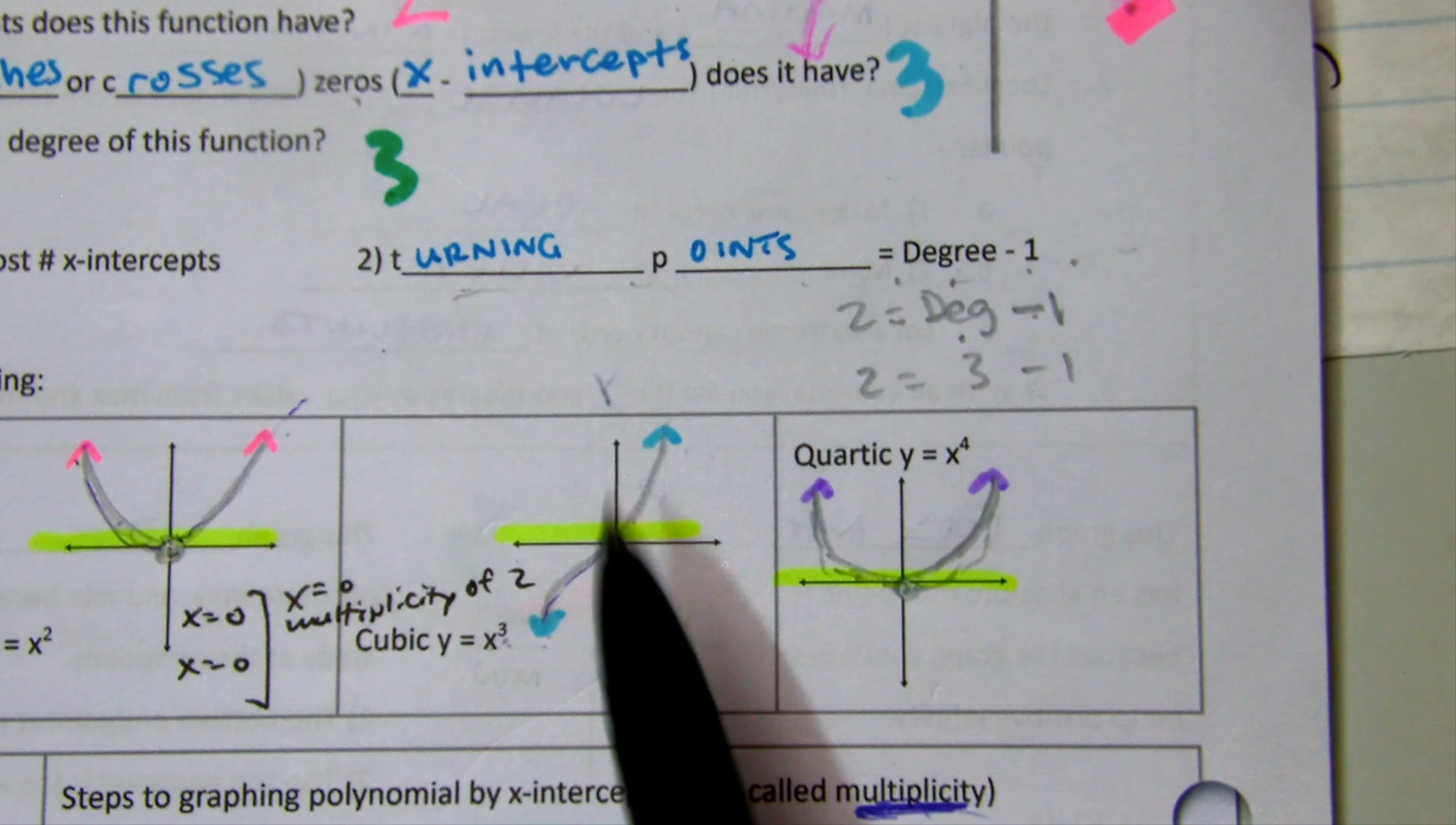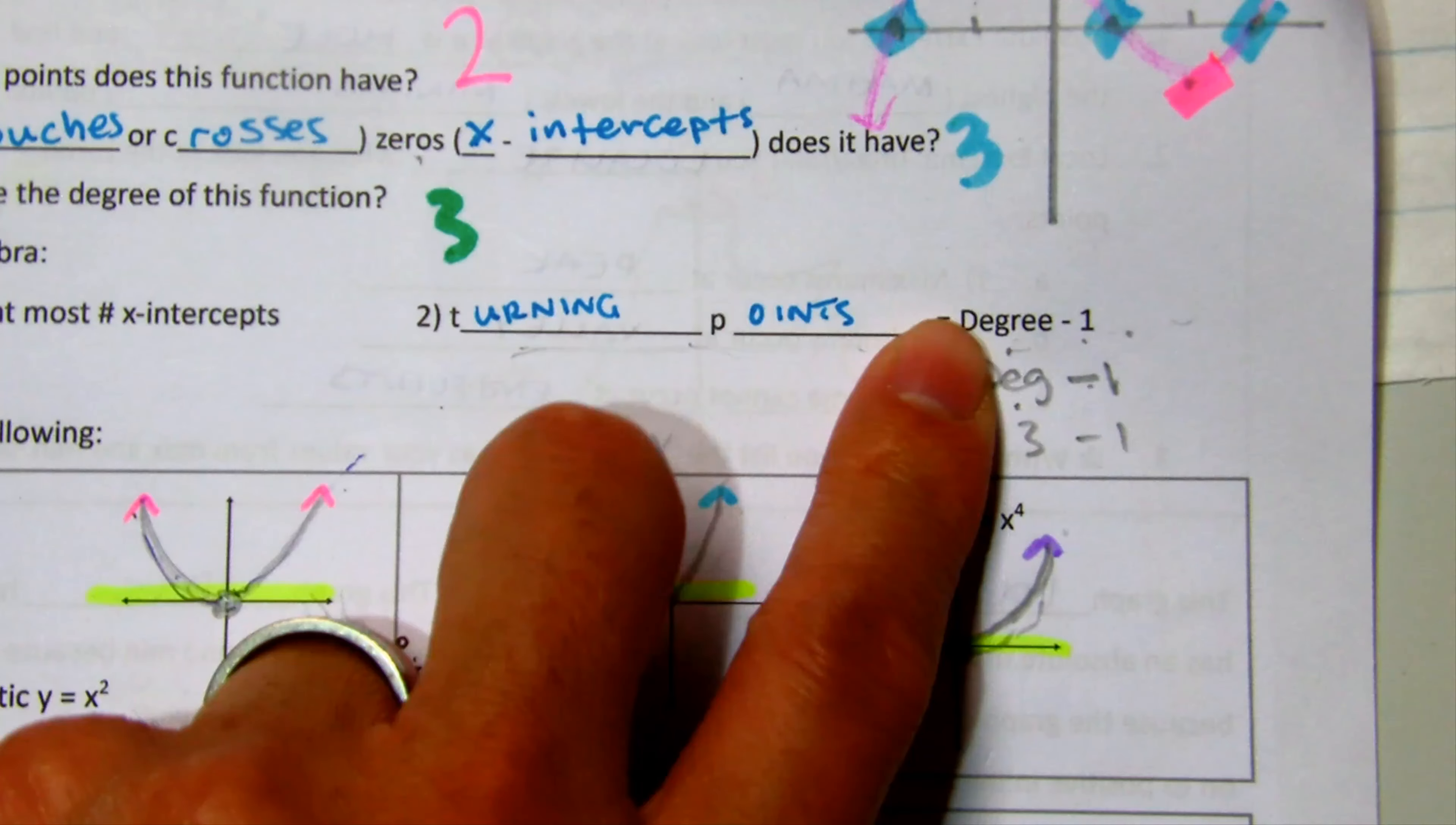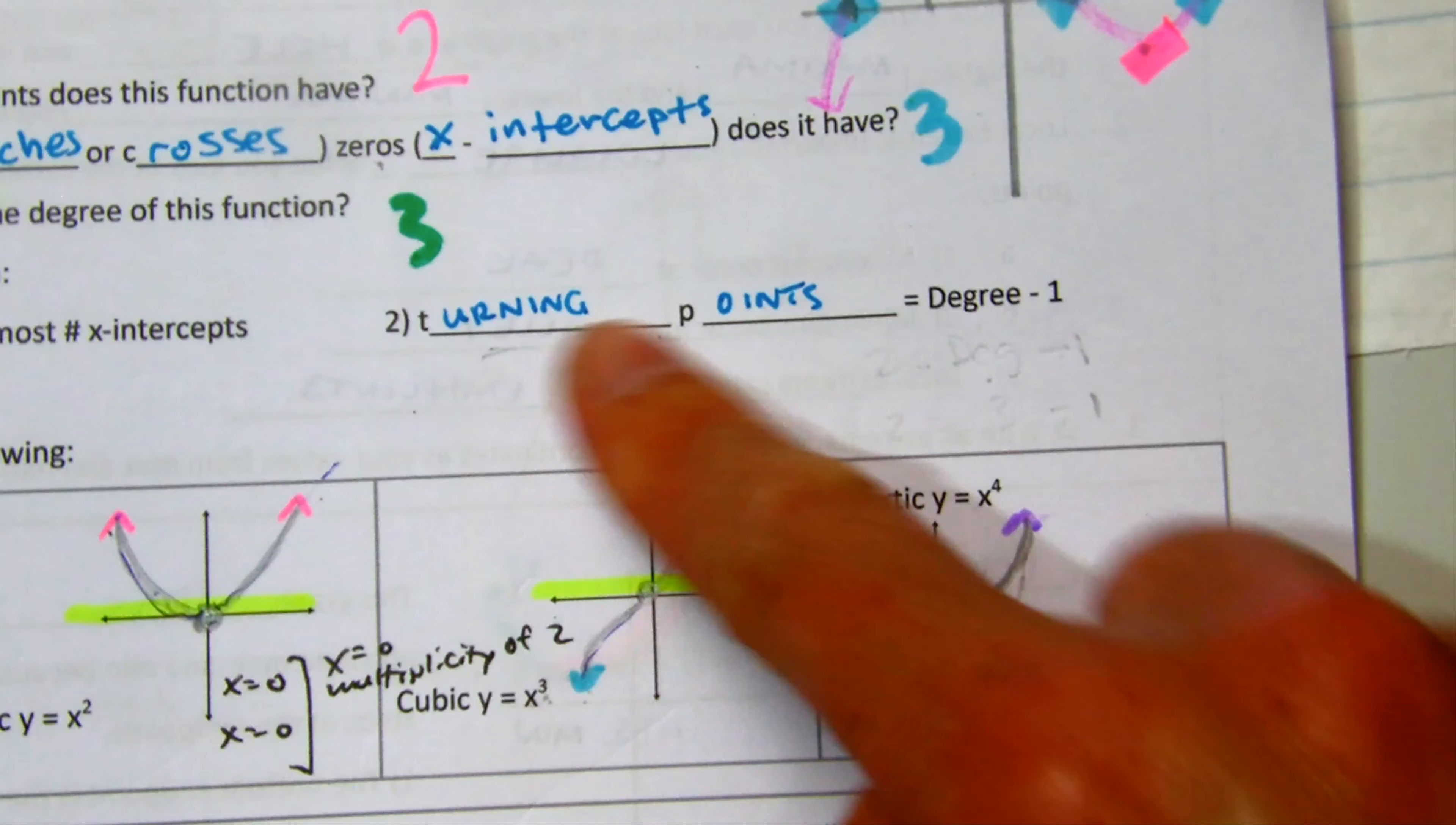The other thing you might want to write down is this formula. Turning points is equal to the degree minus 1. The degree turning points is equal to the degree minus 1.